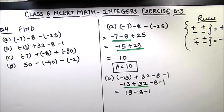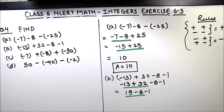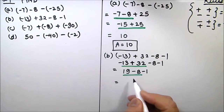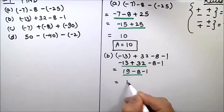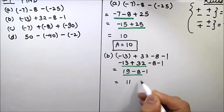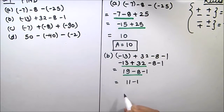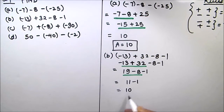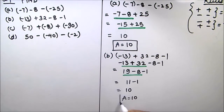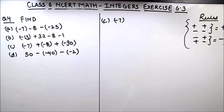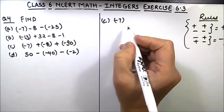Next we take 19 and minus 8: 19 minus 8 is 11. Then 11 minus 1 is 10. So 10 is our final answer for part B. Let's move on to part C, which is minus 7 plus (minus 8) plus (minus 90).